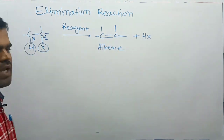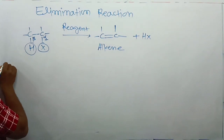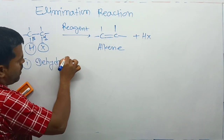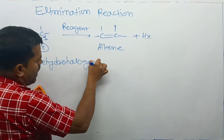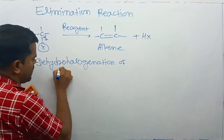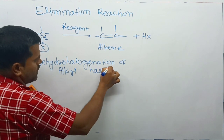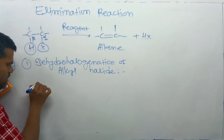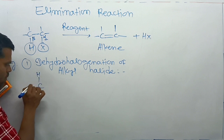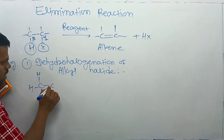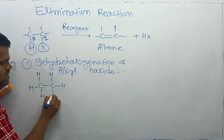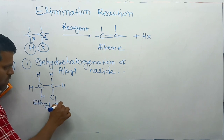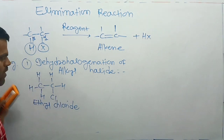Here are some examples. The first one is dehydrohalogenation of alkyl halide. Here is a member of alkyl halide: hydrogen is bonded to carbon in this way, and here is a Cl atom. Its name is ethyl chloride.